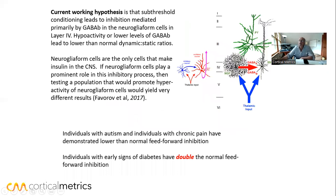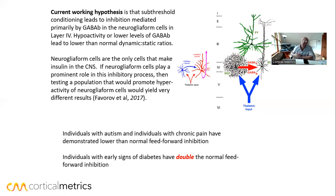Sub-threshold stimuli — stimuli you can't feel — first turn on inhibition. That inhibition is mediated primarily by GABA-B and neurogliaform cells, which are in layer four where thalamic inputs come in. When inhibition turns on, the next stimulus is less likely to activate that circuit — it raises the threshold, turning down sensitivity so the threshold keeps getting higher and higher.